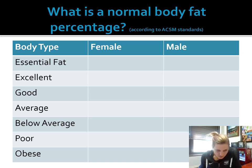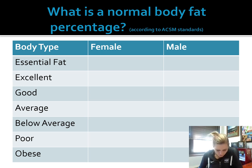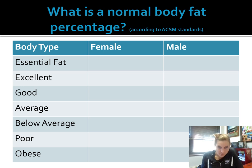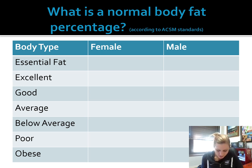Moving down to good: for a female, 19% is good, and for a male, 9.5%. Average for females is 22%, average for males is 16%. Below average for females is 25% and below average for males is 19.5%. Poor is 32% for females and 25% for males. Our obesity ranges, according to ACSM, are 32% for females and 25% for males.